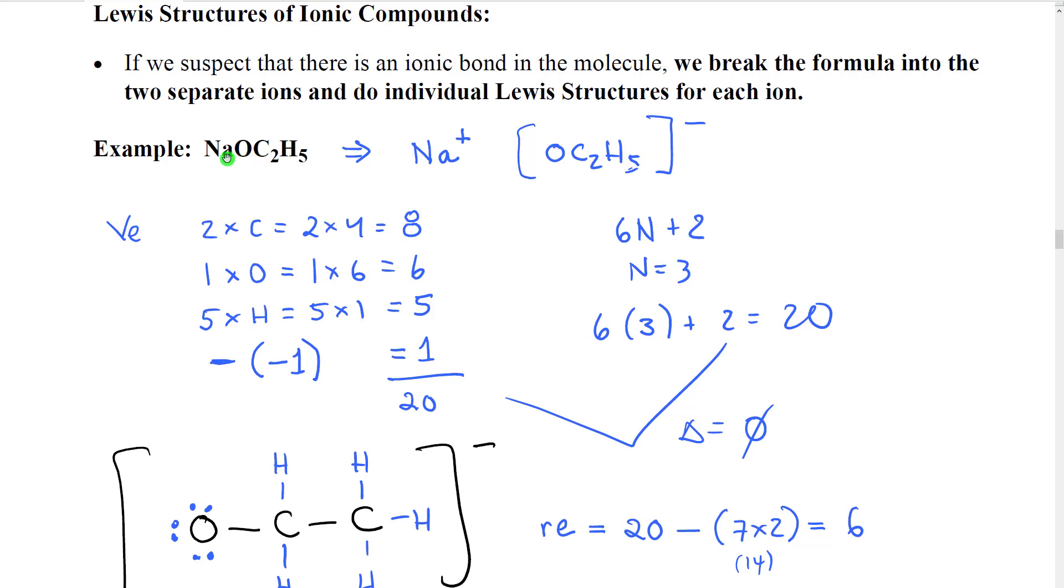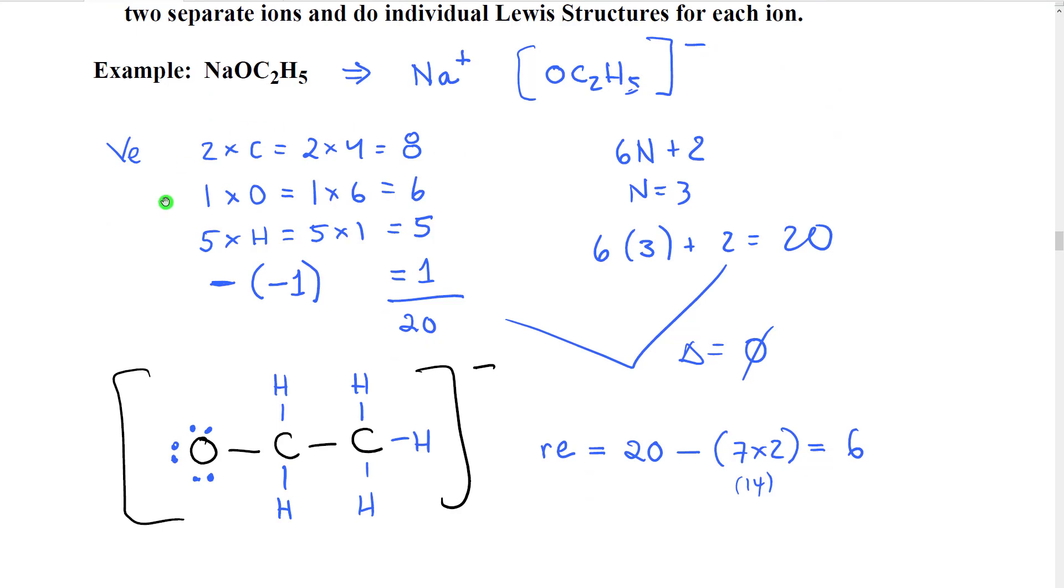So what we're going to do then is separate the metals out as ions and all of the non-metal atoms as one piece. And that piece will be an ion with an overall charge. So for example, we would have a sodium plus ion to keep our charge balanced. This OC2H5 would have to have a negative charge. So now we're going to do the Lewis structure of the negative ion. The positive ion, this is actually the Lewis structure because sodium plus ion has no valence electrons. It has the same number of electrons as its nearest noble gas neighbor.